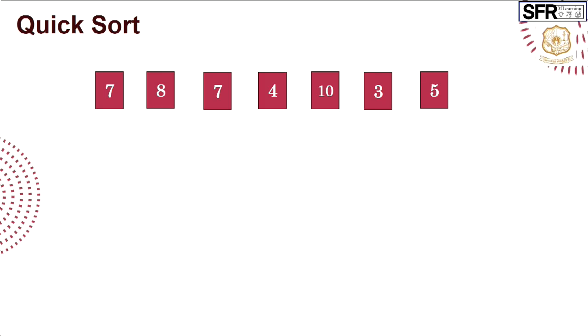Going to give an example: consider the set of seven numbers — 7, 8, 7, 4, 10, 3, and 5. Among these elements, we have to choose one number as a pivot element. How to choose a pivot? We can choose the first element, or the last element, or we can find the median of the first, middle, and last element. We can also choose randomly any number as a pivot. In this example, I have taken the last element as the pivot, so 5 is considered to be the pivot element.